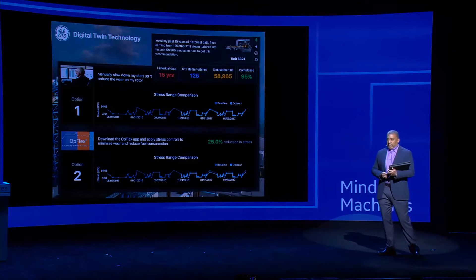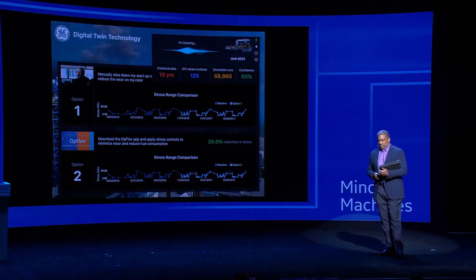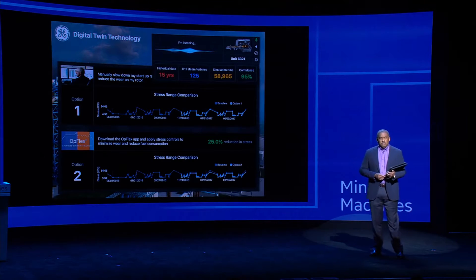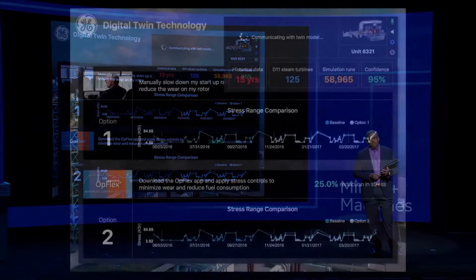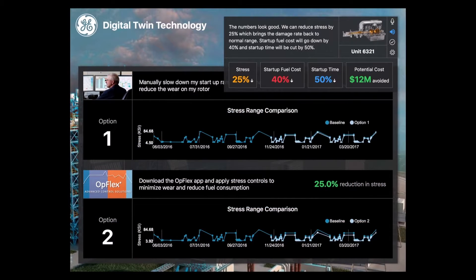Twin, I need a financial perspective. Tell me about the numbers. The numbers look good. We can reduce stress by 25%, which brings the damage rate back to normal range. Start-up fuel cost will go down by 40%, and startup time will be cut by 50%. You will also avoid $12 million by preventing an unplanned outage.